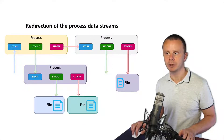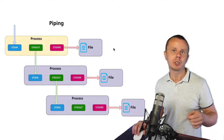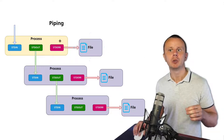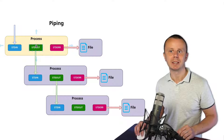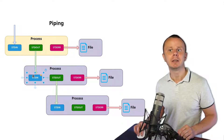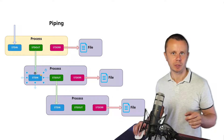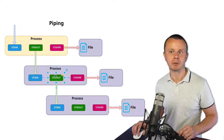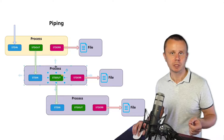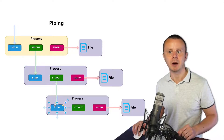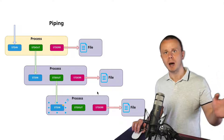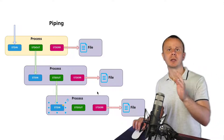If you want to do so, you need to use another operator called pipe, and an approach called piping. With piping, you can send data from stdout of one process to stdin of another process. You can also send stdout data from that process to stdin of yet another process, and so on — you can pipe different processes one after another.